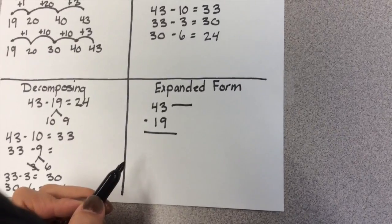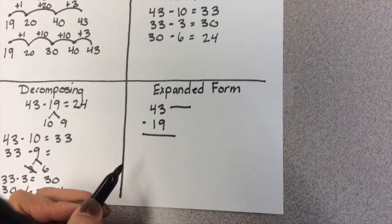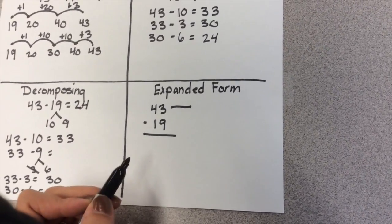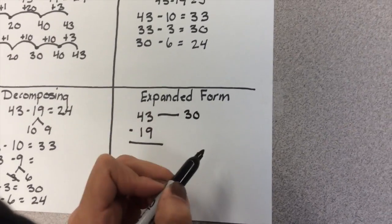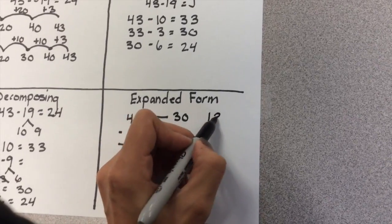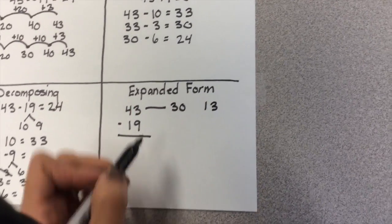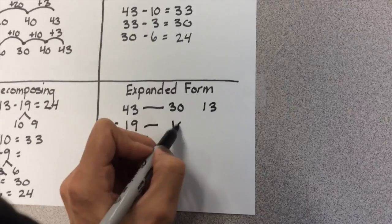But through experience of using base 10 blocks, the kids have learned, once they try to subtract it, it's not going to work. That 43 can also be broken up into 30 and 13. And then 19 would stay a 10 and a 9.